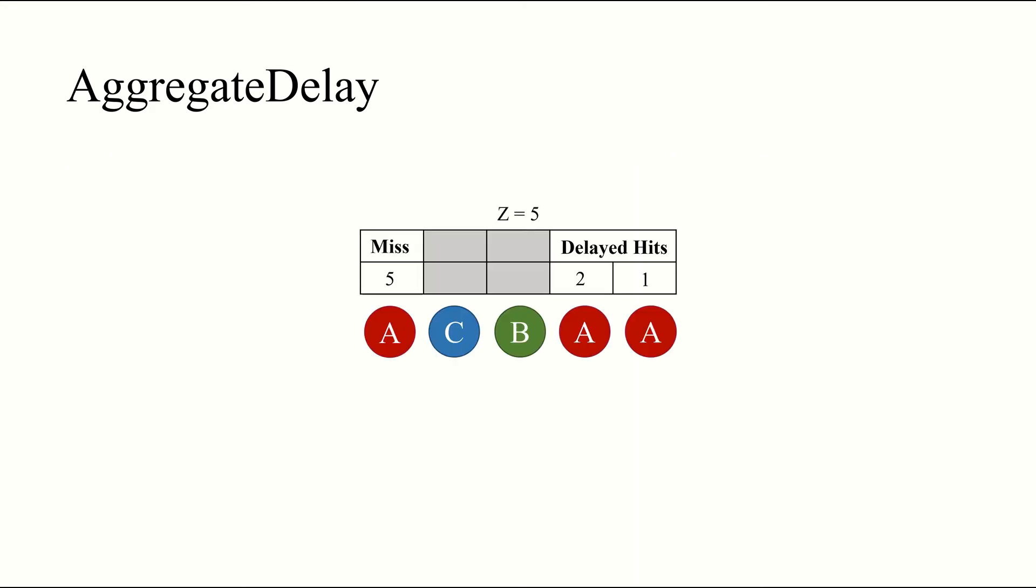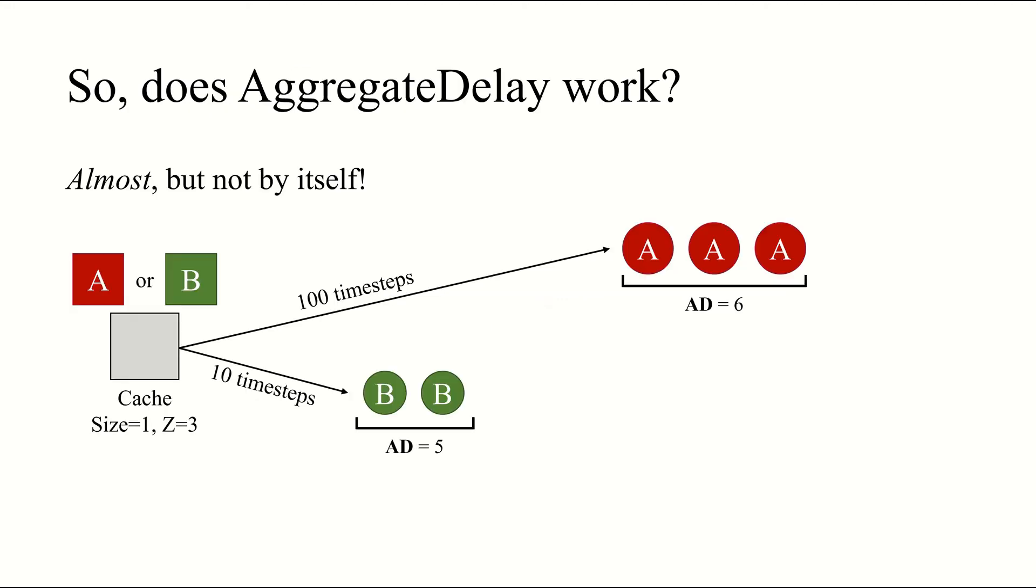Here's an example of how to compute the aggregate delay. We have a Z value of 5, and 3 requests to A, the original miss, plus 2 delayed hits. So, in computing the aggregate delay for A, we would count the miss as well as the delayed hits, but ignore the request to unrelated objects B and C. This yields an aggregate delay of 8. So, does this metric work? Well, almost, but not quite by itself.